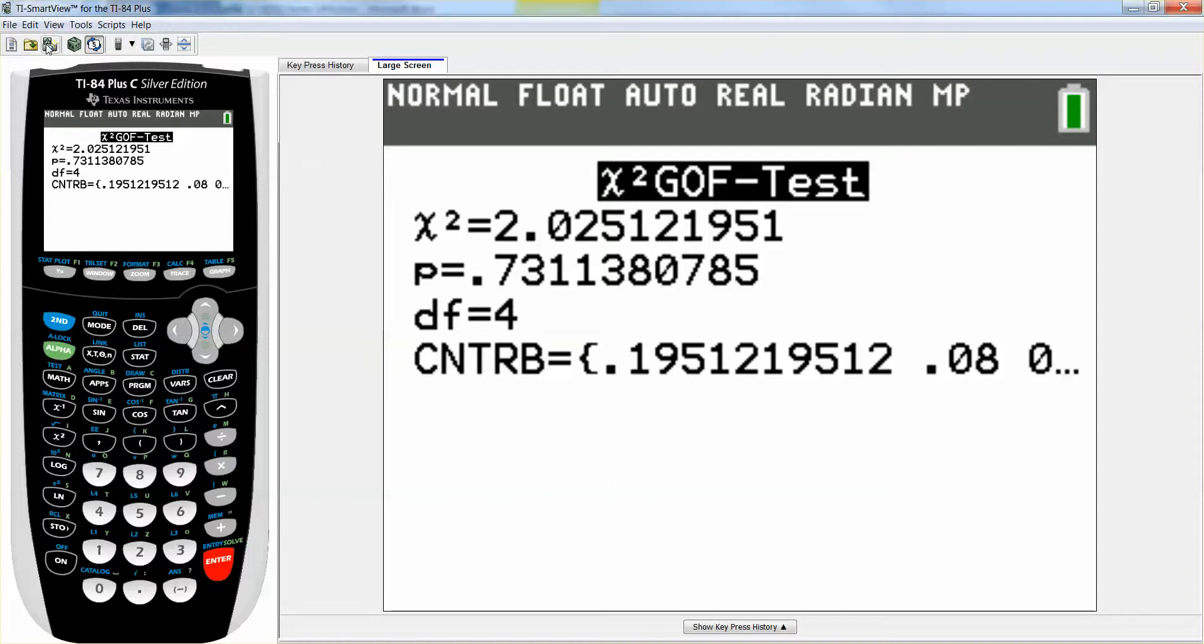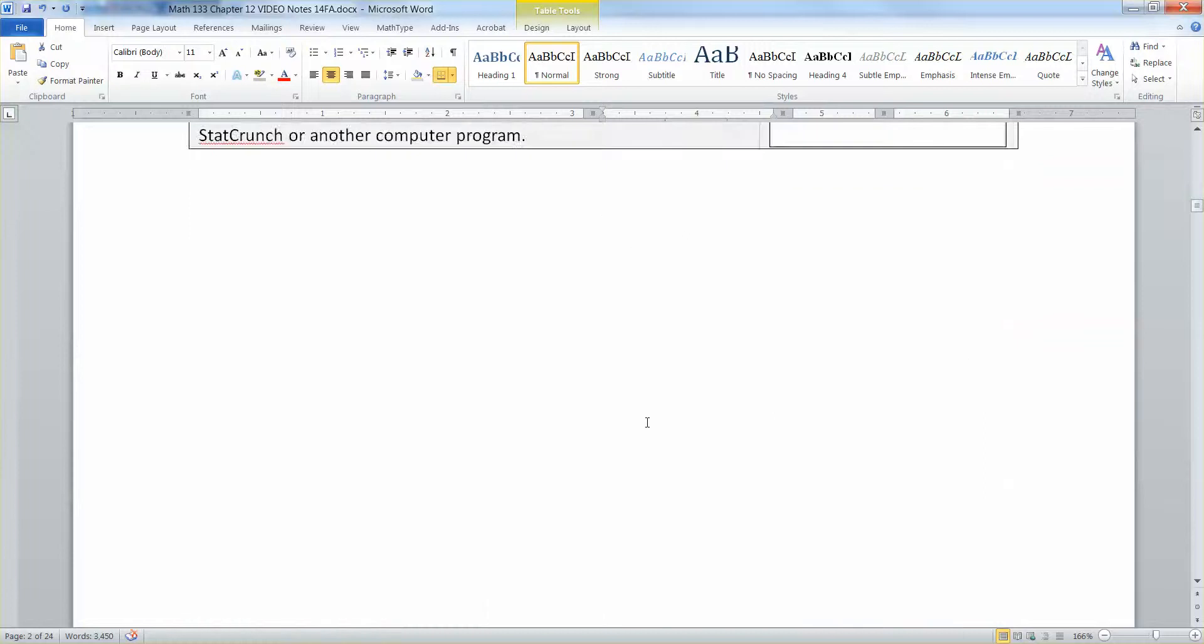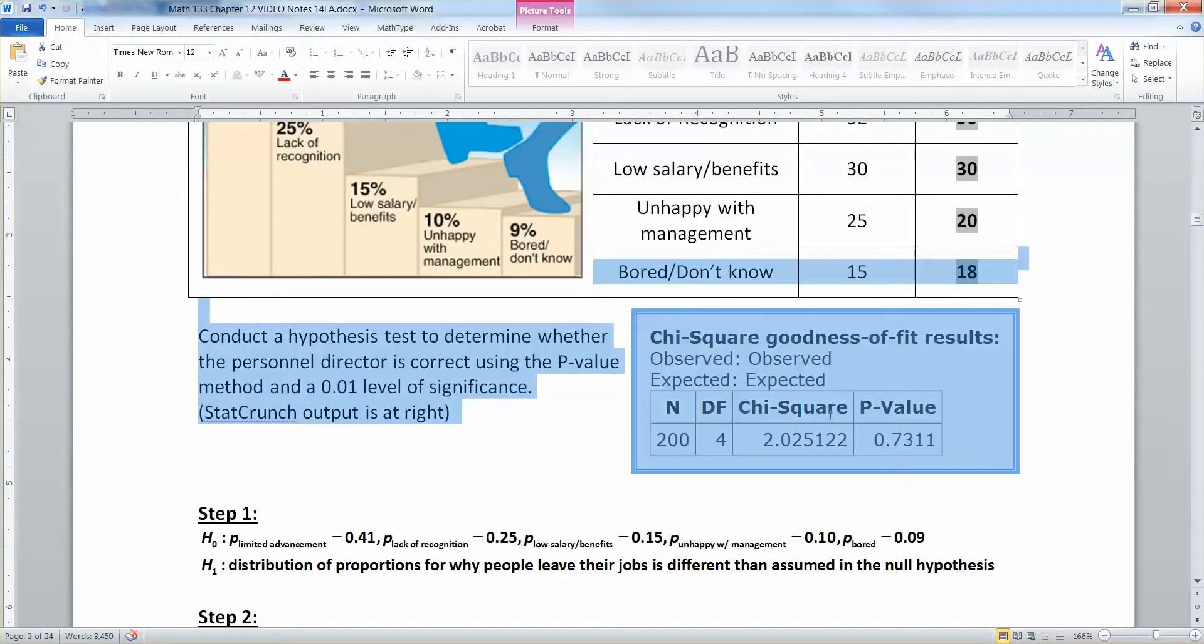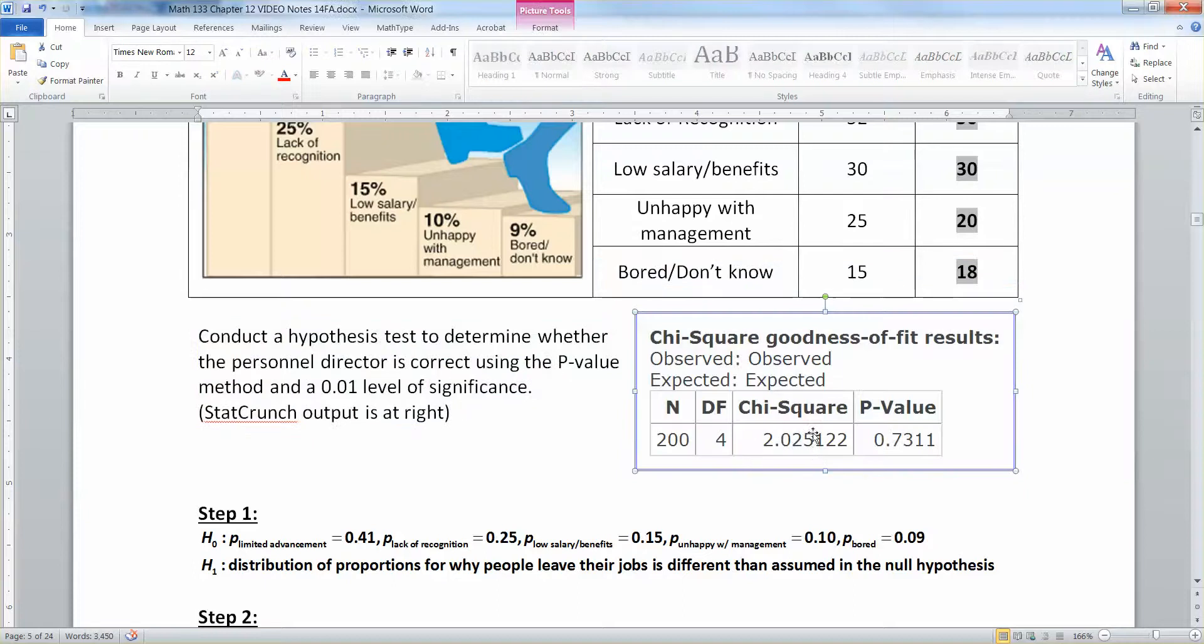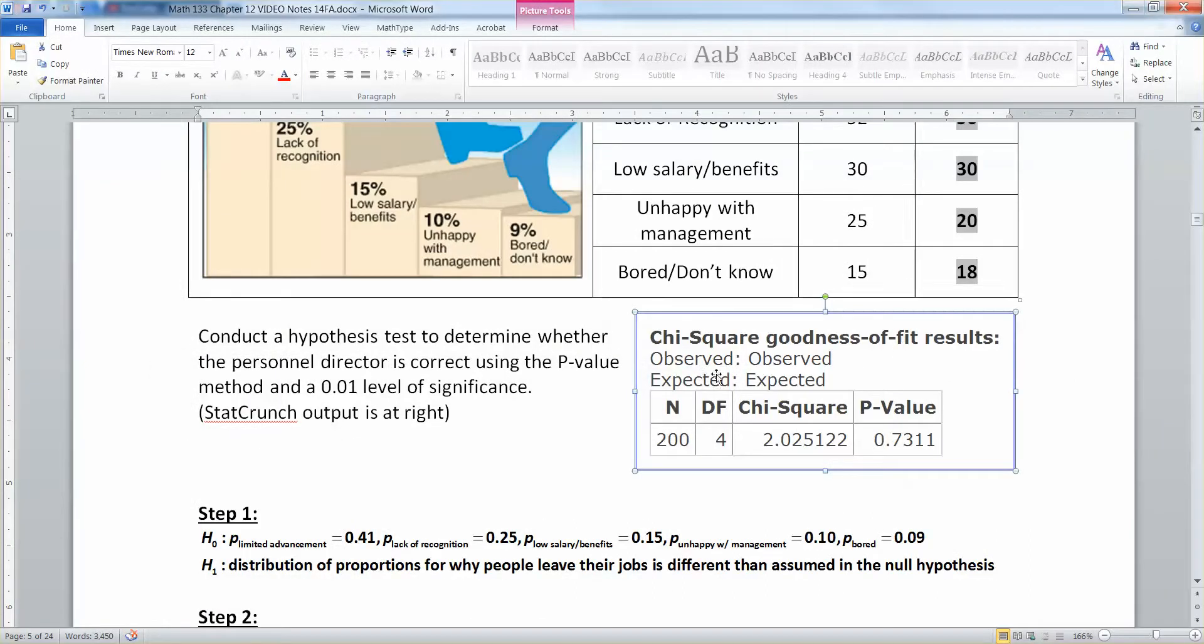There you can see right there I've got my chi-square statistic right here, 2.025. My p-value is 0.7311. If I go back and show you the computer output, there it is right there—0.7311 and 2.025. So this is from the calculator. This part right here is from StatCrunch.